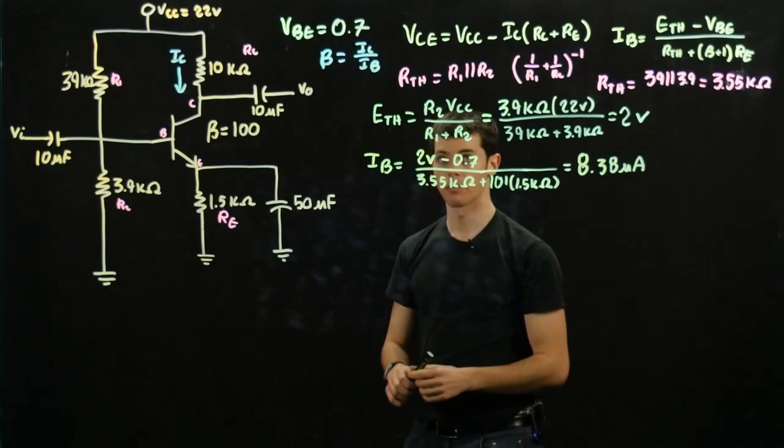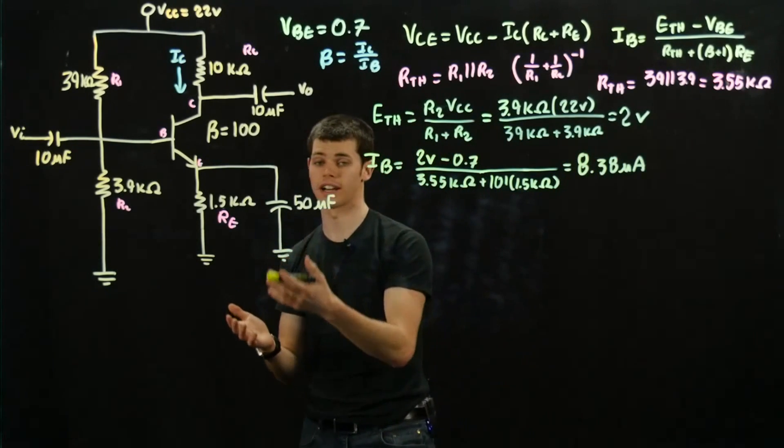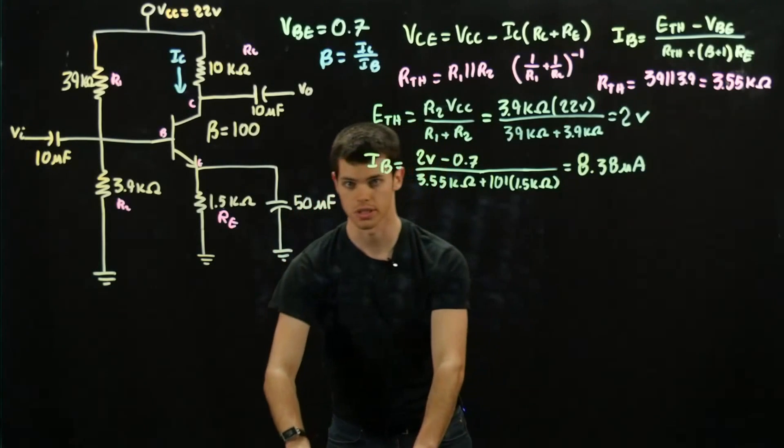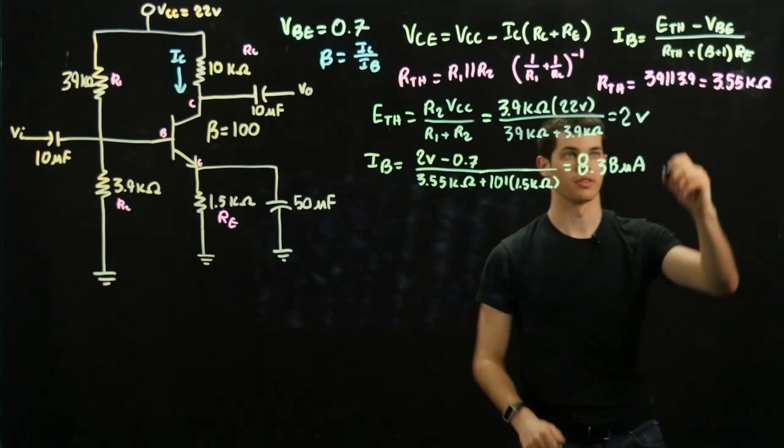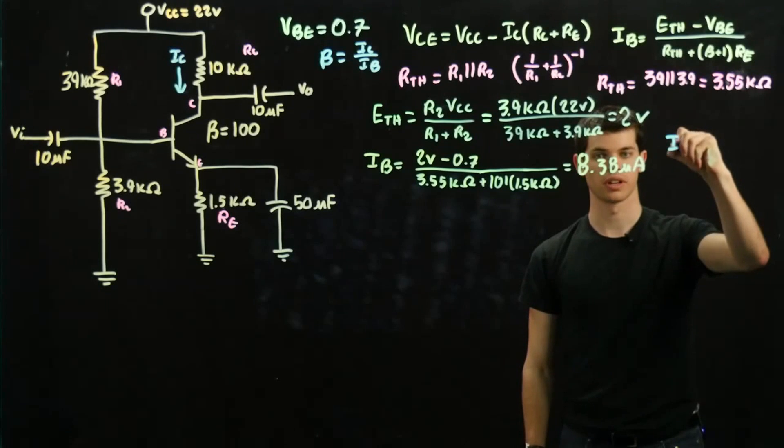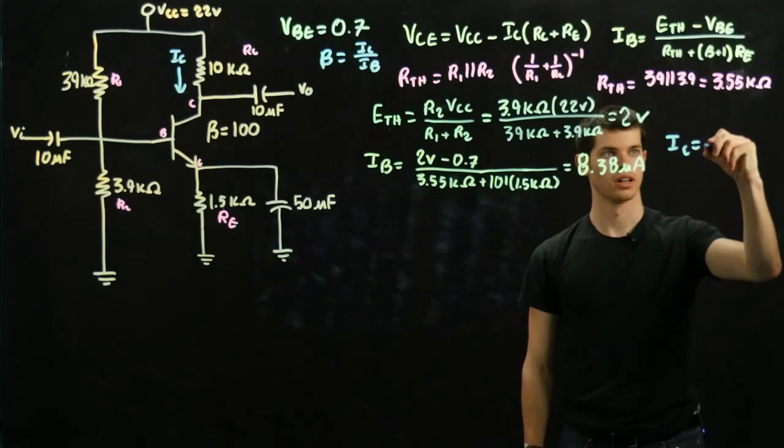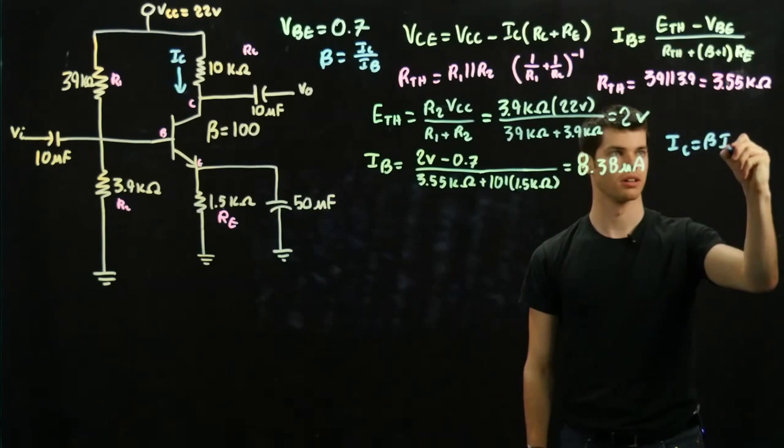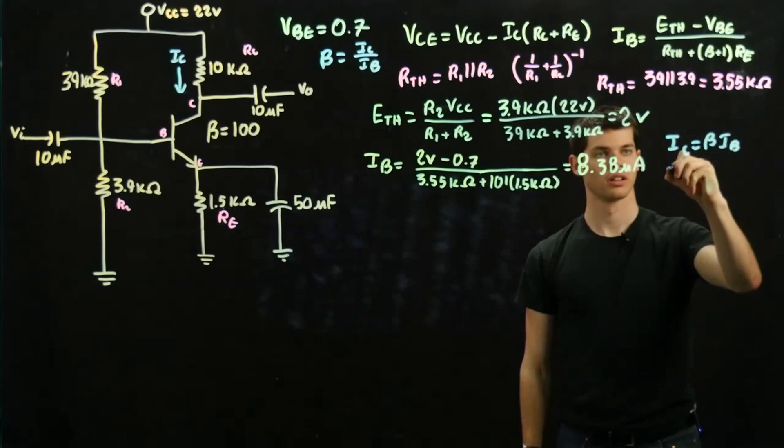Alright, and now what we're going to do is we still need to find IC, but luckily we have this ratio up here which will help us out. So if we do a little math of this ratio, we can find IC is equal to beta times IB.